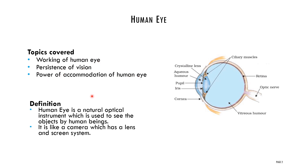First, we will see the definition of the human eye. The human eye is a natural optical instrument which is used to see objects by human beings. An optical instrument is an instrument used to see objects. Some artificial optical instruments are telescope, microscope, and periscope. The human eye is one of the natural optical instruments.